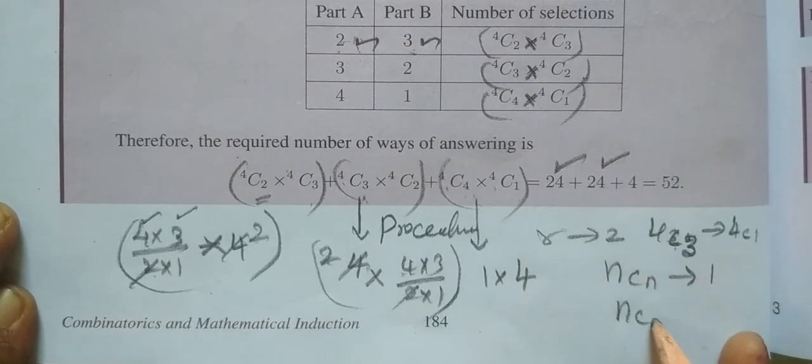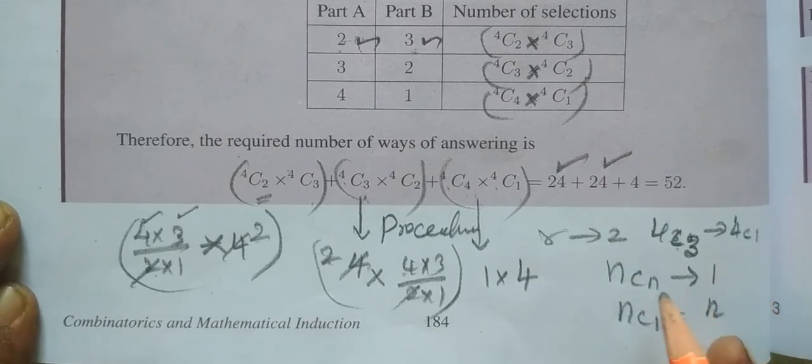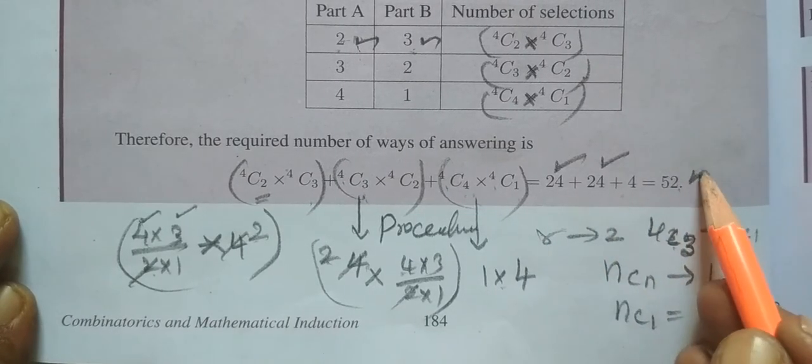And 4C1 is nothing but 4. This is nothing but N. So if you add this, you are getting 52.